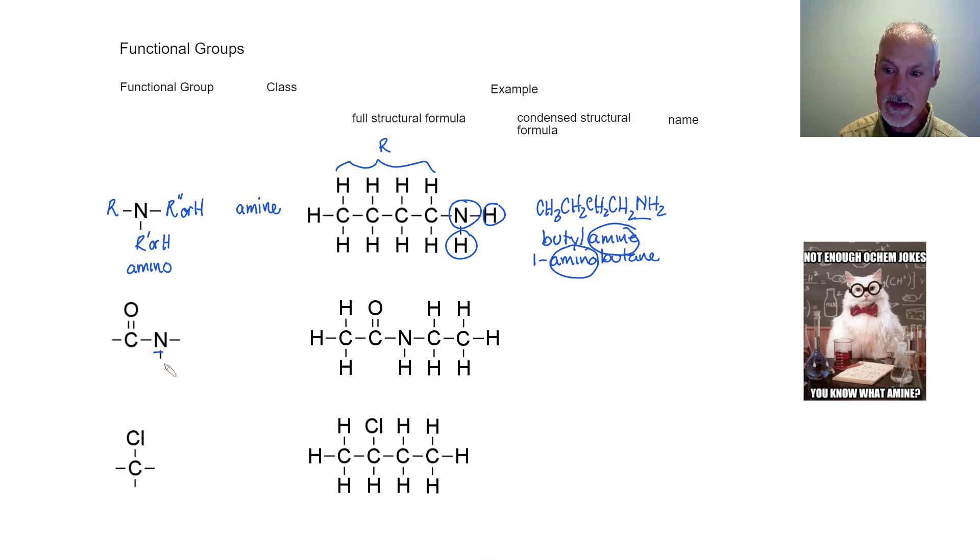Moving on to our next compound that has nitrogen in it, but we also have a doubly bonded oxygen in it. And this particular combination is called amido, and it's a member of the amides. So here I can see that combination right there.